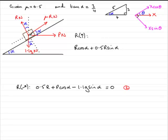Now, as I said earlier, P is perpendicular to this direction, so we don't have to worry about P. Then we come to the weight: 1.1g acts downwards in this direction, so we say that's minus 1.1g. This is now the resultant force, and because the system is in equilibrium, that resultant force must equal zero.